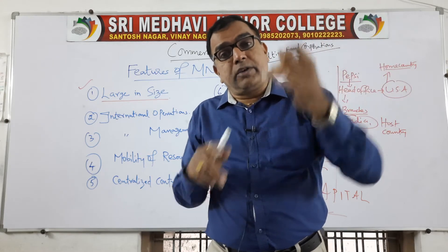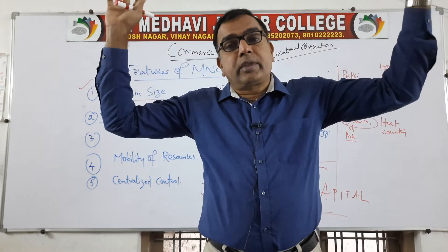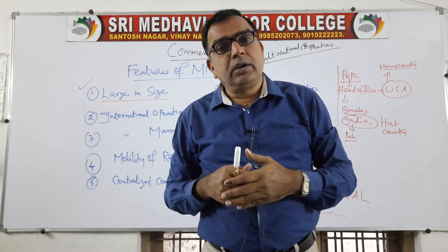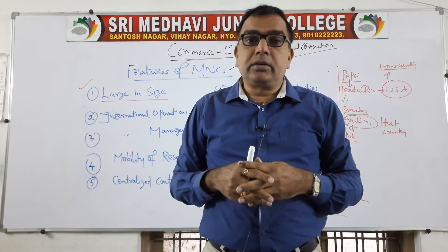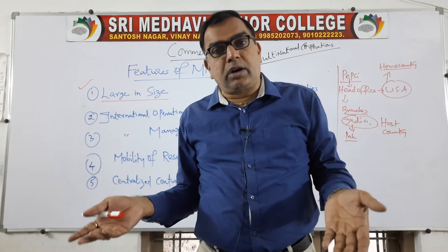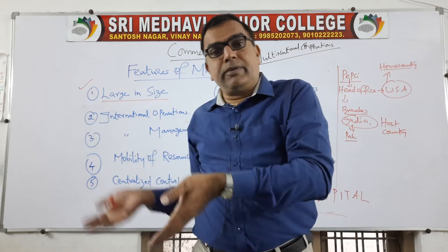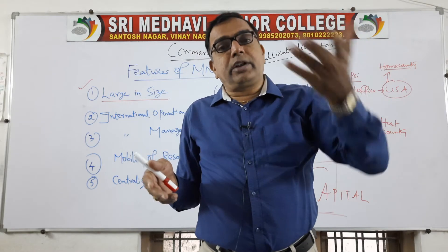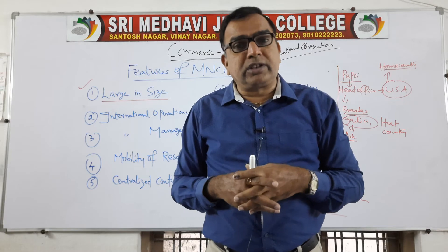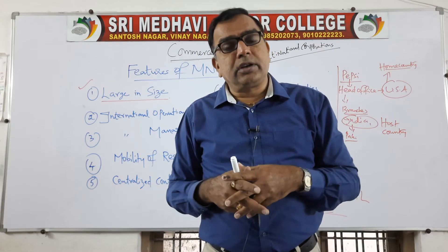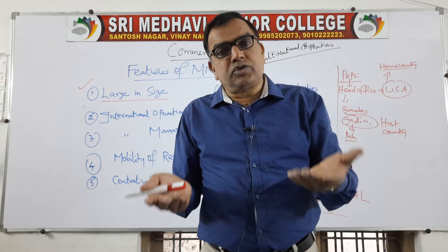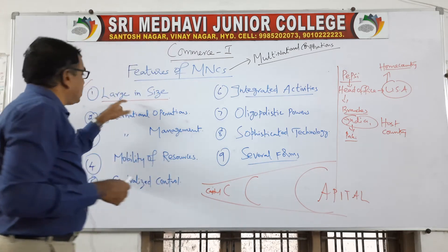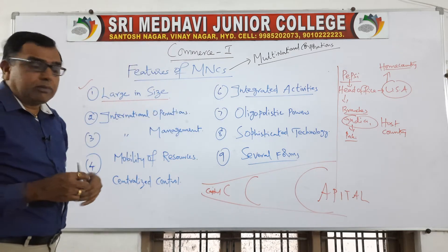As they invest a lot of money, they will have a very big building, heavy machinery, and recruit thousands of employees — so automatically the size will be big. For example, if you are managing only a junior college, your building will be small. But if you are managing a junior college, degree college, and PG college, you require a five or six-story building with hundreds of lecturers and thousands of students. Because of the scale of operations, the size increases and naturally you invest heavy amounts. So the first feature is large in size.